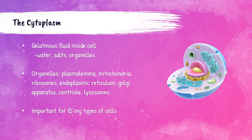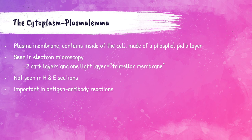The cytoplasm is the gelatinous fluid inside the cell, composed of water, salts, and organelles. Surrounding the nucleus is all the cytoplasm, and you can see these structures called organelles distributed throughout it. These include the plasmalemma, mitochondria, ribosomes, endoplasmic reticulum, Golgi apparatus, centrioles, and lysosomes. The amount and appearance of the cytoplasm is helpful in determining cell type.